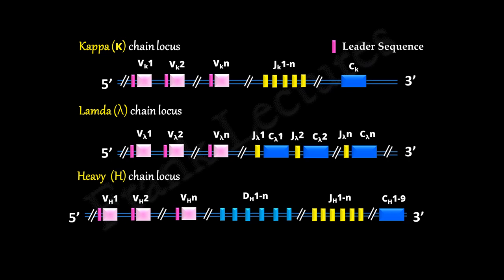I hope you have watched the previous video lecture on immunoglobulin gene organization. We have studied that the variable region of an immunoglobulin chain is encoded by multiple gene segments. These gene segments are first rearranged to form a functional variable region exon.